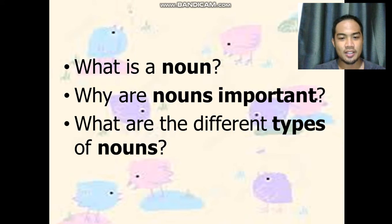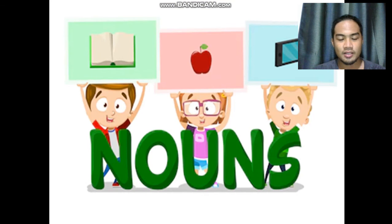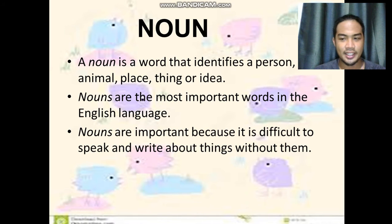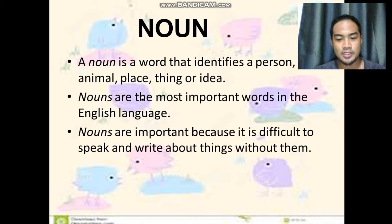In this lesson, we will tackle these questions: What is a noun? Why are nouns important? And what are the different types of nouns? A noun is a word that identifies a person, animal, place, thing, or idea. Nouns are the most important words in the English language, because it is difficult to speak and write about things without them. Nouns are everywhere in English.